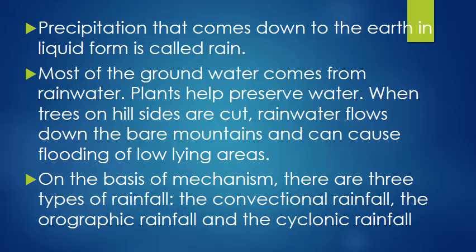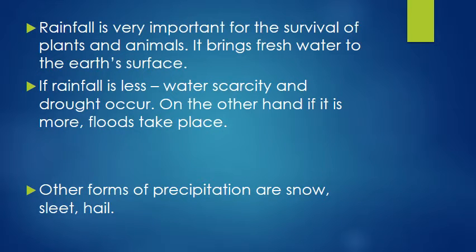Most of the groundwater comes from rainwater. Plants help preserve water. When trees on hillsides are cut, rainwater flows down the bare mountain and can cause flooding of the low-lying areas. On the basis of mechanism, there are three types of rainfall: the convectional rainfall, the orographic rainfall, and the cyclonic rainfall. Rainfall is very important for the survival of plants and animals as it brings fresh water to the earth's surface. If rainfall is less, water scarcity and drought occur; if it is more, floods take place. Other forms of precipitation are snow, sleet, and hail.